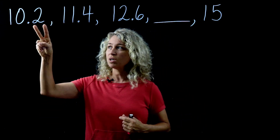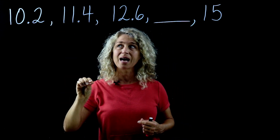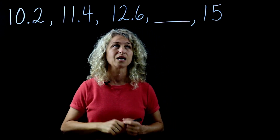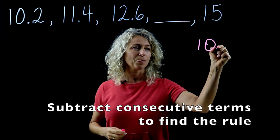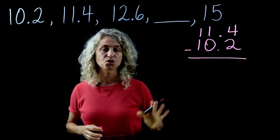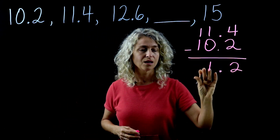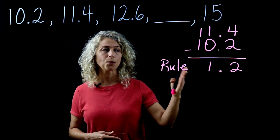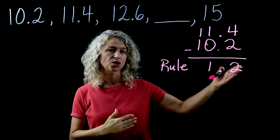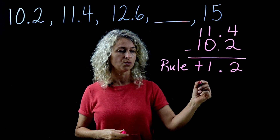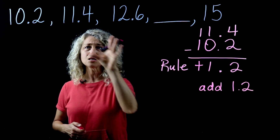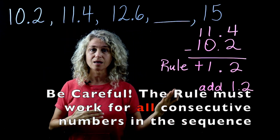Step two is to look at any two numbers that are side by side in the sequence and find the difference between them in order to find a rule. So let's take 10.2 and 11.4 and subtract these two numbers. The result is the rule. Because the sequence is increasing, the rule is not just 1.2 — it is 'add 1.2'.